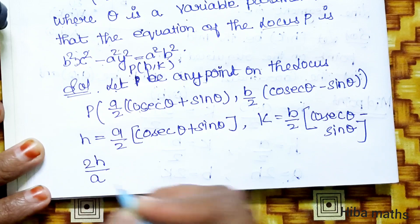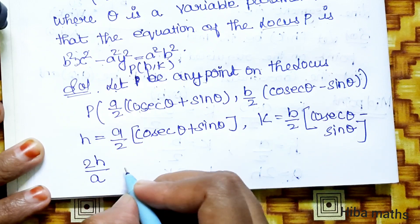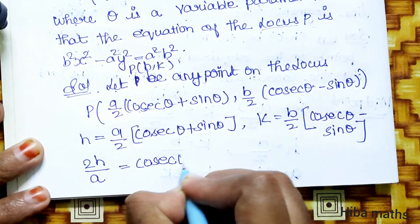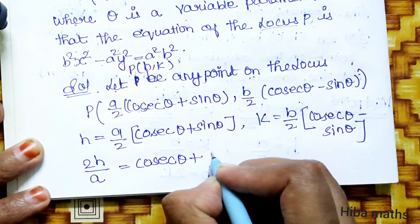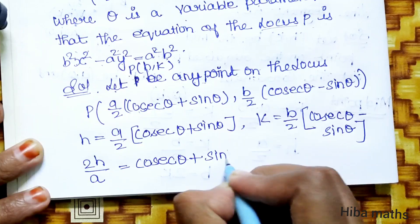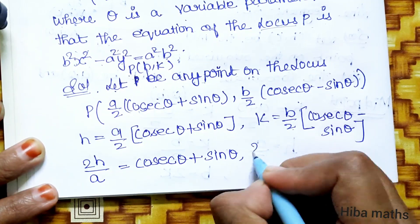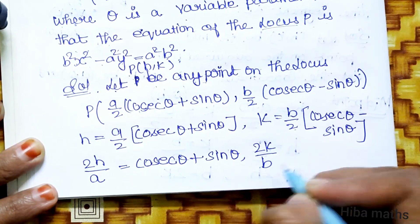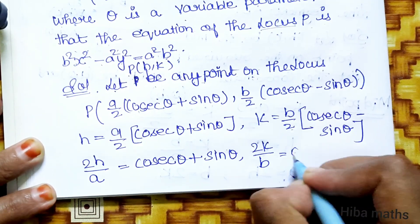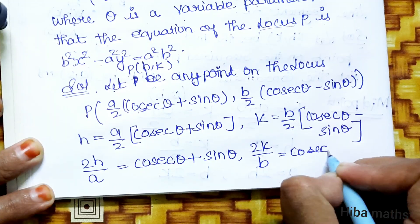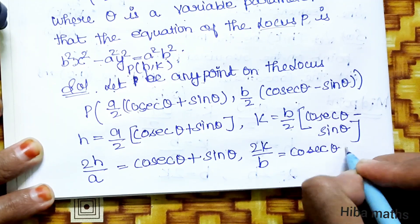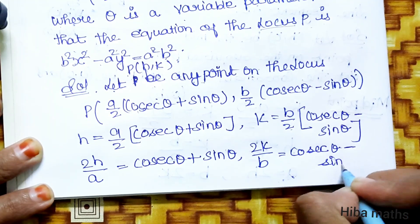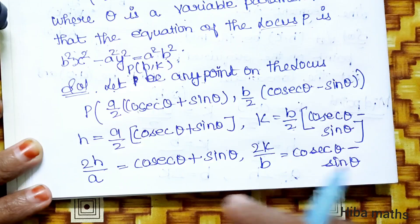Rearranging, 2h/a = cosθ + sinθ, and 2k/b = cosθ - sinθ. Now cosθ and sinθ can be removed by squaring and then adding or subtracting the equations.